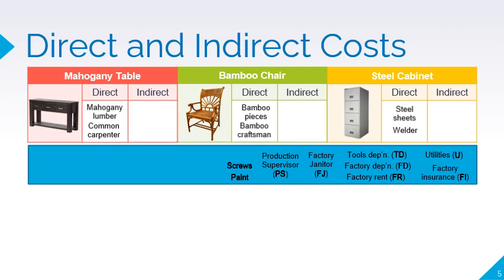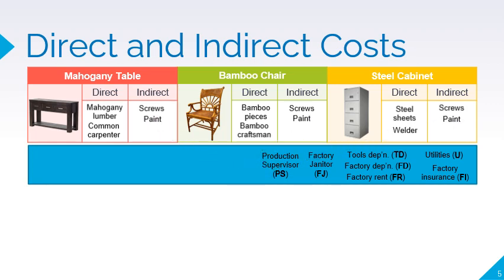Screws are used in all three products. However, the cost of screws is immaterial relative to the cost of the other materials. It is impractical to trace the number of screws used in each product. Hence, the cost of screws is considered an indirect cost allocated to the mahogany table, bamboo chair, and steel cabinet. Paint is also used in all three products, but just like the screws, the cost of paint is immaterial and tracing the amount of paint used in each product is impractical. Hence, the cost of paint is also an indirect cost allocated to all three products. The salary of the production supervisor is another indirect cost since it cannot be directly traced to each of the products. Hence, it is allocated to all three products.